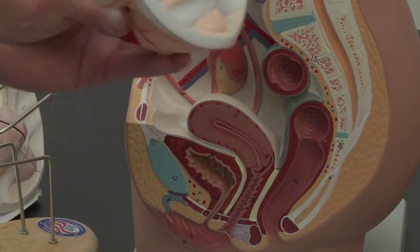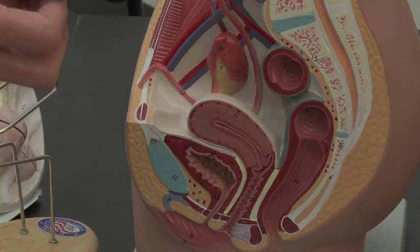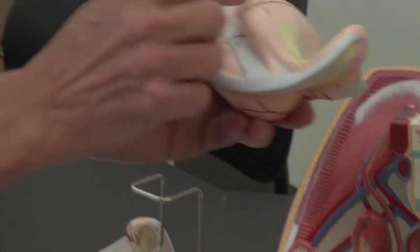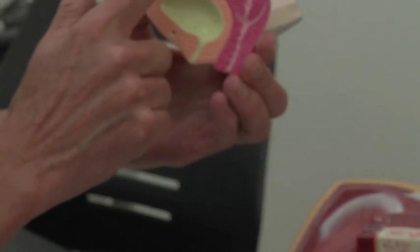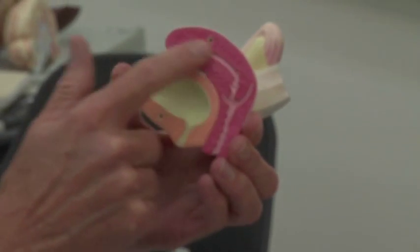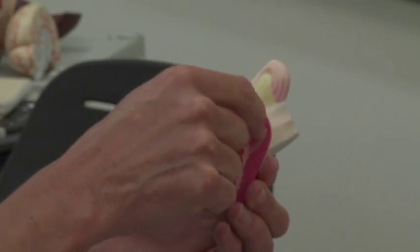If you look at the uterus though, there's three main regions. You've got the rounded region up here that is known as the fundus, and then you've got this main portion which I'm just going to open up, and that's going to be the body of the uterus.